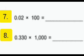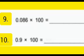In this way we can multiply different decimal numbers by 10, by 100, by 1,000. Question number 9: 0.086 multiplied by 100. The product will be 8.6.